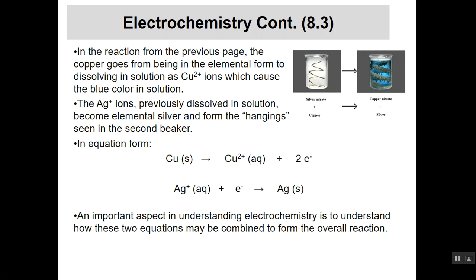The silver ions, previously just floating around the solution, now are actually elemental silver hanging off of the copper in that right-hand beaker. In equation form, the copper is a solid. It starts out as a solid on the left, ends up producing copper 2 ions, which means it's giving up electrons. So the product is copper 2 ions and 2 electrons. The silver, on the other hand, starts out as silver plus 1 ions, picks up an electron, and forms silver metal on the other side. In electrochemistry, it's fairly important to understand how these two reactions work together.